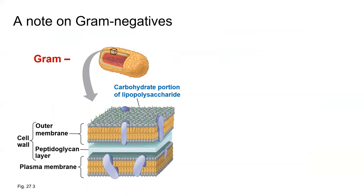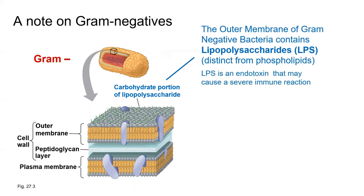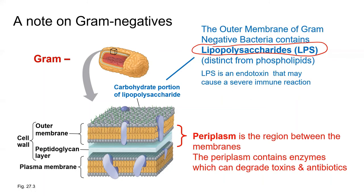A couple more things about the gram negative cell: the lipids on the outer layer of the outer membrane are not typical phospholipids — they're actually LPS or lipopolysaccharide, which is medically important because it's an endotoxin. If bacteria enter your blood and your immune system detects these endotoxins, you can have a severe immune reaction leading to serious illness. There's also a special layer between the two membranes called the periplasm — a tiny compartment containing solutes and enzymes, some of which help the organism resist antibiotics. So gram negatives are traditionally harder to treat because they're more resistant to certain antibiotics naturally due to the periplasm.